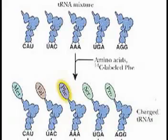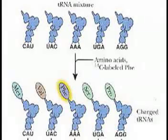Once the ribosomes get their instructions, they'll take this and they'll send another protein out, called a transfer RNA, to get all of the amino acids — the building blocks — to start assembling the proteins.